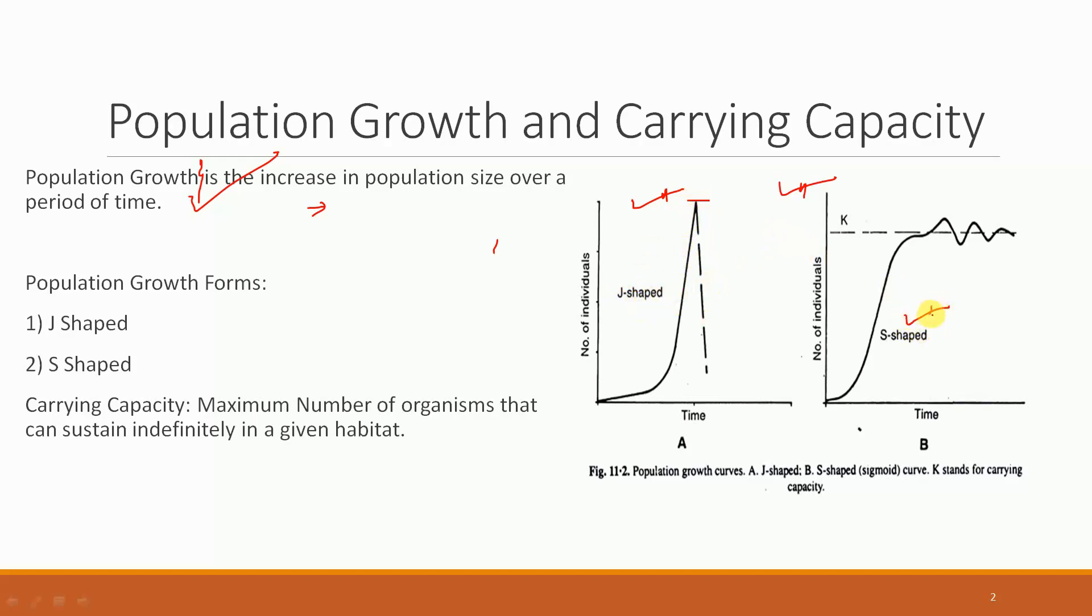The second type is the S-shaped curve. In this, the number rises first and then reaches a limit known as the carrying capacity. This also represents the environmental resistance, and after this the population becomes stable, representing an S-shaped curve of population growth.